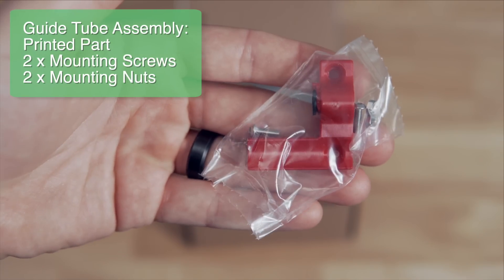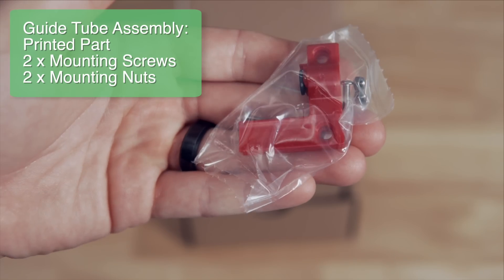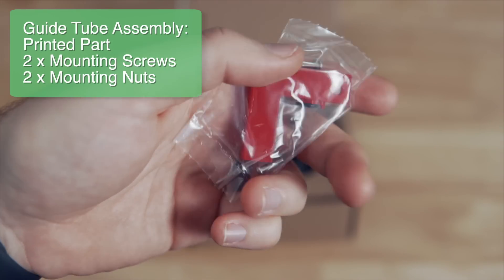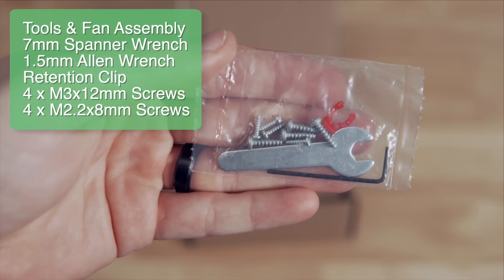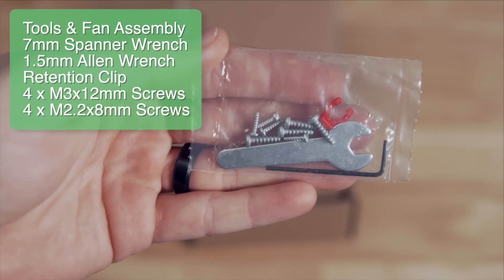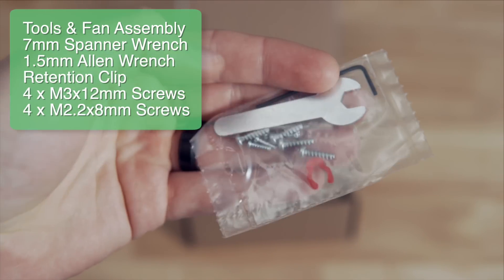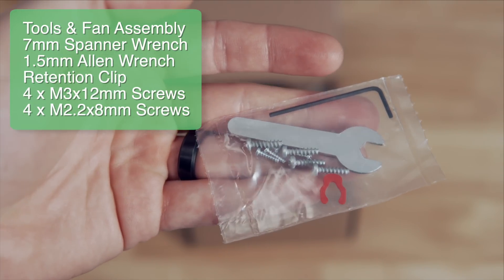Our reverse Bowden mount along with the screws and nuts to mount that to where our extruder currently is. Plastic self-tapping screws, these will be used to mount our layer cooling fan and our heat sink fan to the included printed fan shroud.